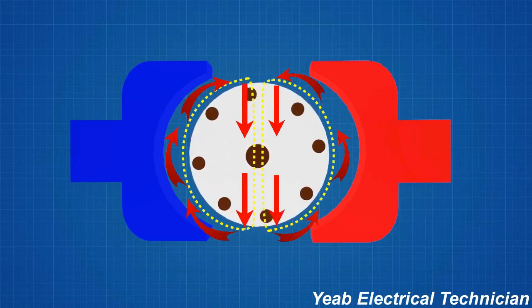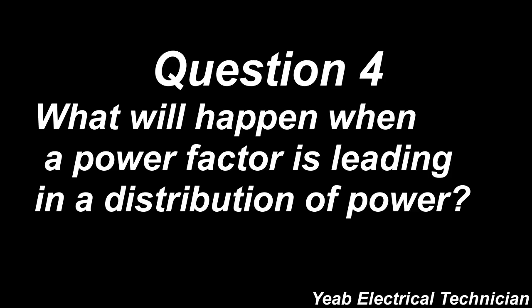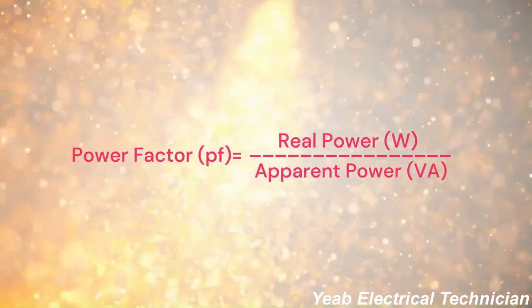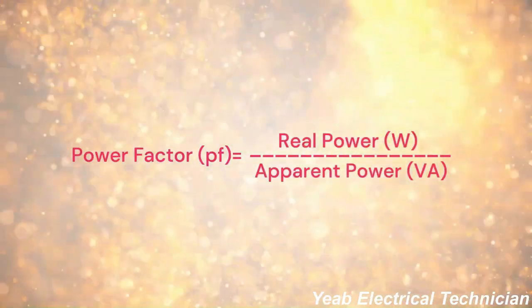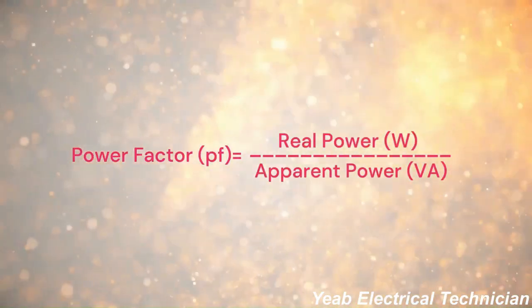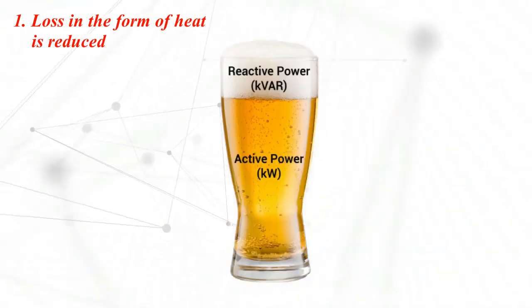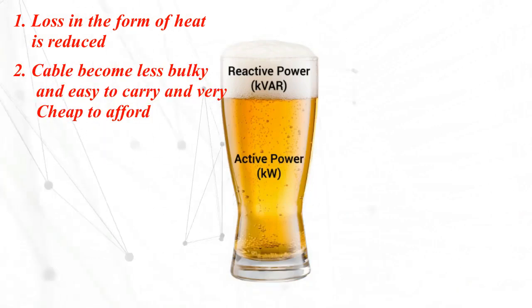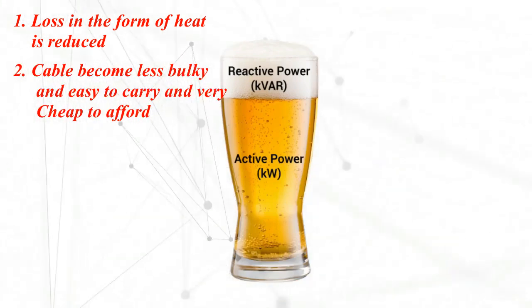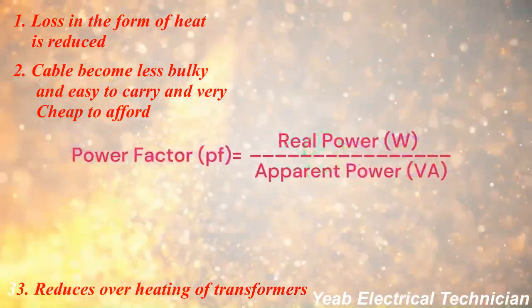Question number four: what will happen when power factor is leading in power distribution? If there is a high power factor, that means the power factor is close to one, three things will happen. First, losses in the form of heat will be reduced. Second, cable becomes less bulky, easy to carry, and cheaper to afford. Third, it also reduces overheating of transformers.